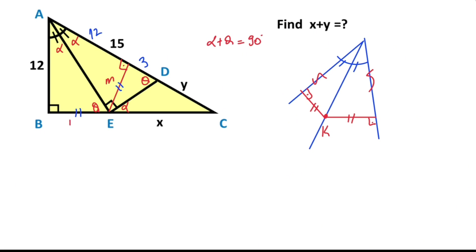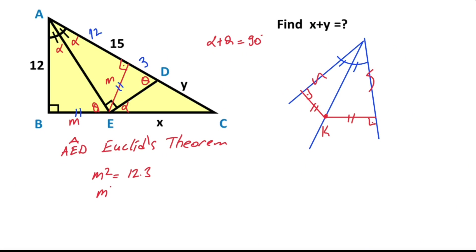Let's return to the question. Let's call these equal parts m. If we apply the geometric mean (altitude) theorem for triangle AED, m squared equals 36, that means m equals 6 units.